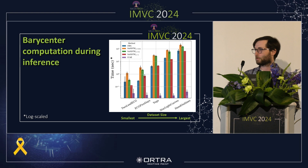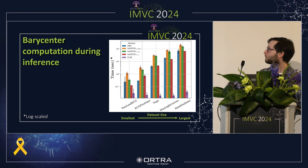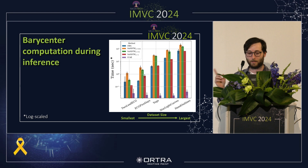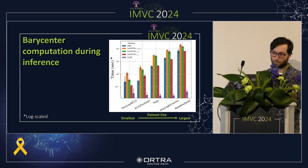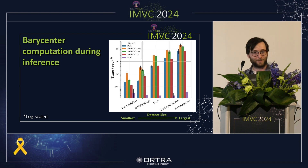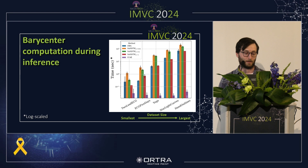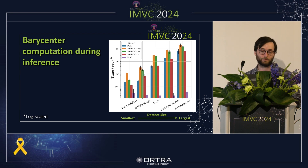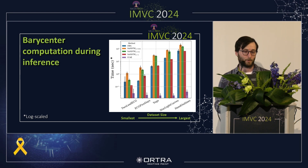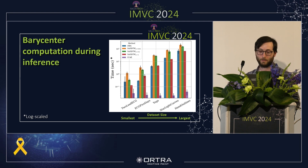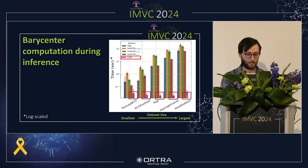Regarding computational speed: during inference, our method (shown in purple) works with GPU-based deep learning, so inference is very fast. DTW, even computing just the metric, grows quadratically with sequence length. A very nice property of our approach is that we are linear with the input length.